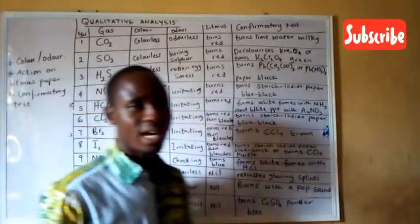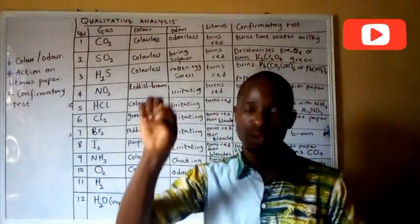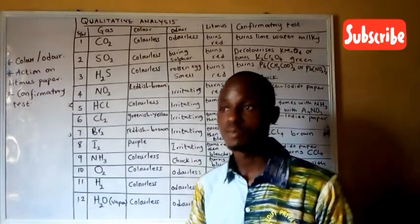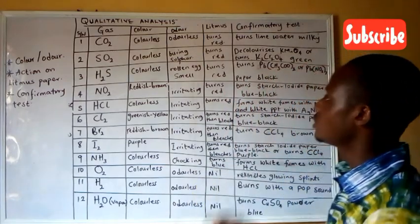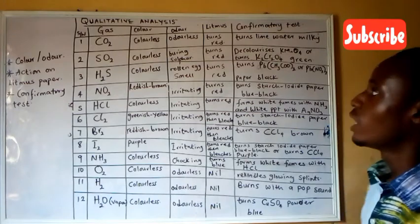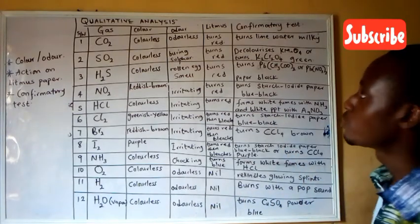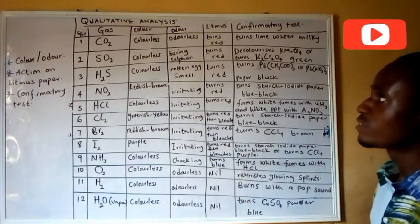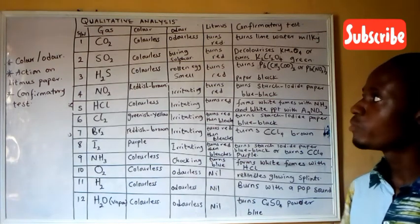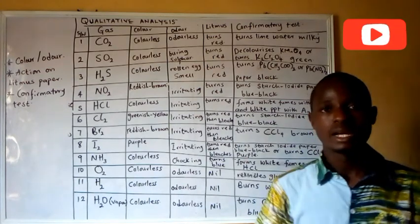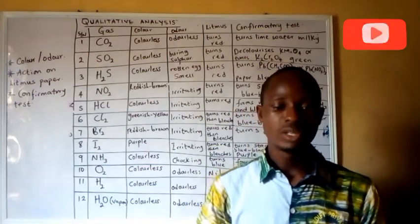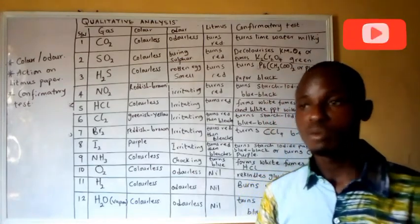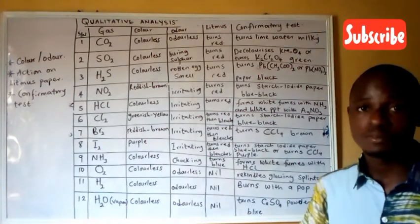Once you confirm a gas, you'll know the type of gas you are working with. There is a table comprising about 12 gases with their action on litmus paper, color and odor, and confirmatory tests. Once you know all these and have them at the back of your mind, whatever test you perform and you discover one of these outputs, you'll be able to identify the gas.